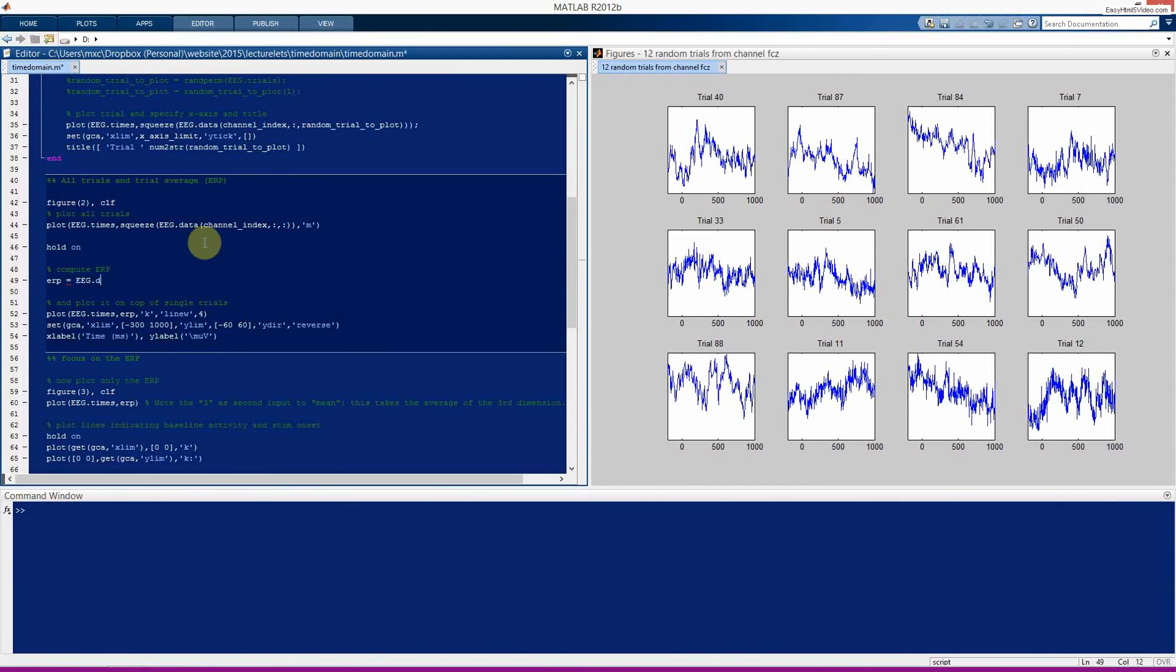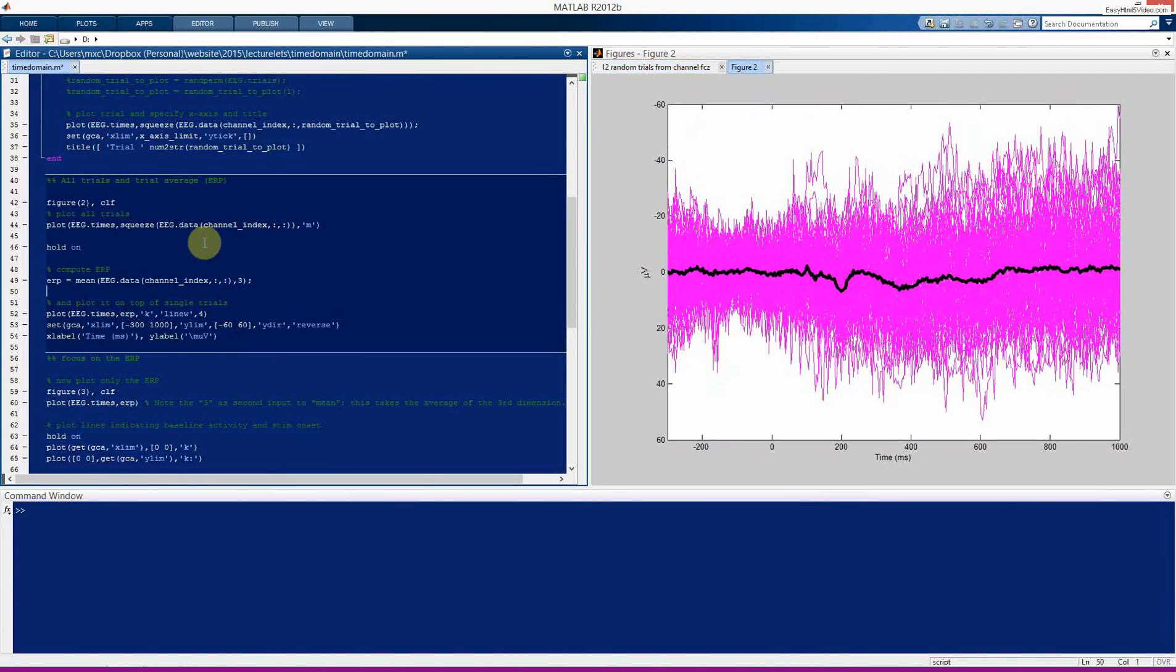So here's the solution, we want the EEG.data, we want the data from this channel, all time points, all trials. And now we want to take the average over the third dimension, it's the third dimension, because the trials are stored over the third dimension. So now you get this nice plot, which reproduces the figure I had in the PowerPoint, except this has slightly nicer colors.